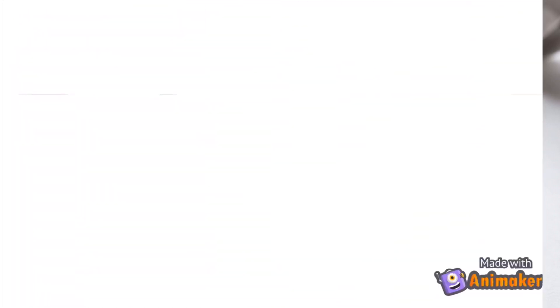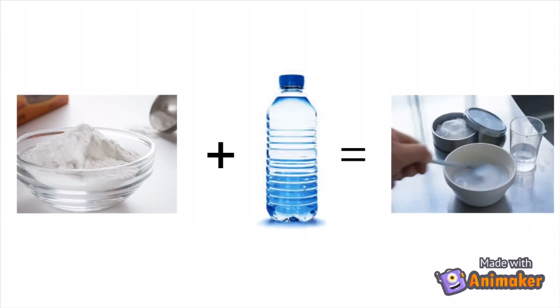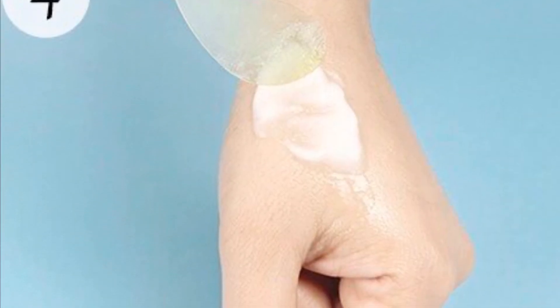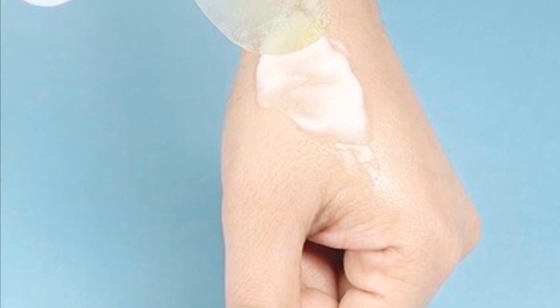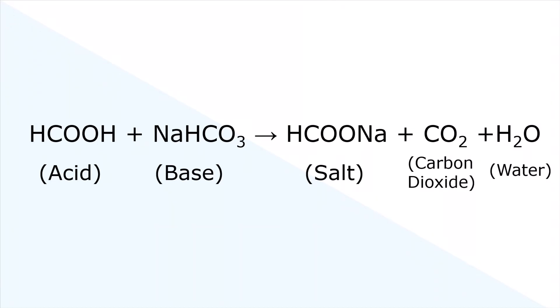Start off by creating a thick paste of baking soda by mixing it with water. Once that is done, apply the mixture to the swollen area. Baking soda will neutralize the acid of the bee sting. Let's form the equation.